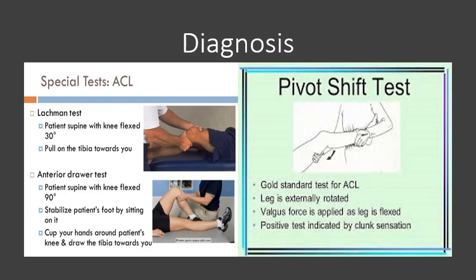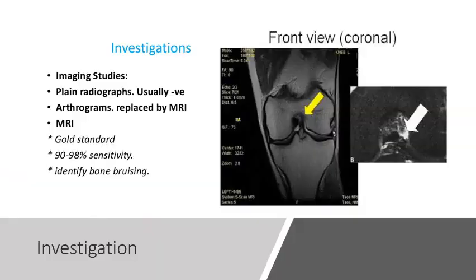The anterior drawer test is performed with the patient supine and the knee flexed to 90 degrees. Stabilize the patient's foot by sitting on it, cup your hands around the patient's knee, and draw the tibia towards you. We first complete this clinical diagnosis and confirm whether the special tests are positive before proceeding to investigations.